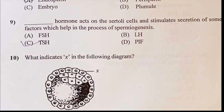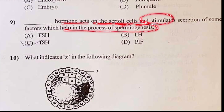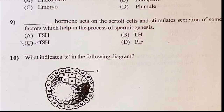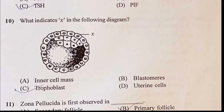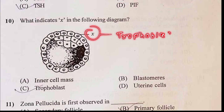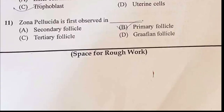V-turban is expansen. Sertoli cells — the terminology process of spermatogenesis. The answer is FSH. X is called trophoblast. The answer should be C.